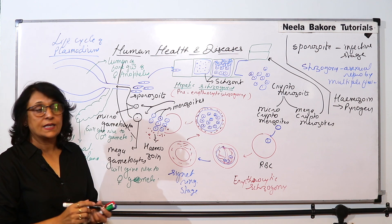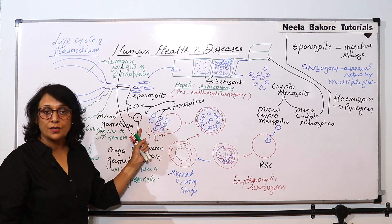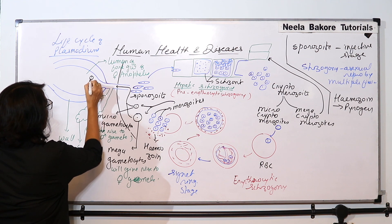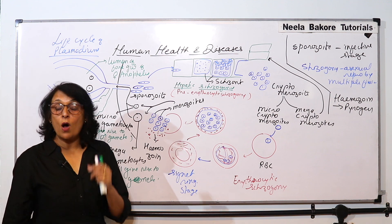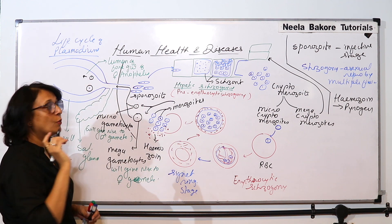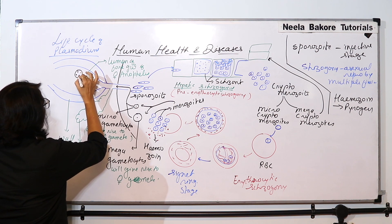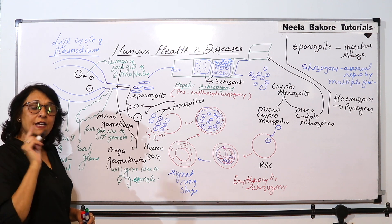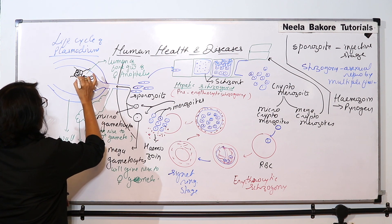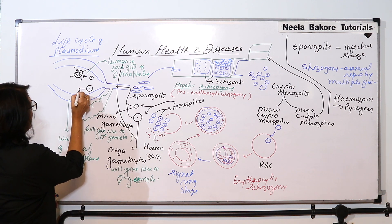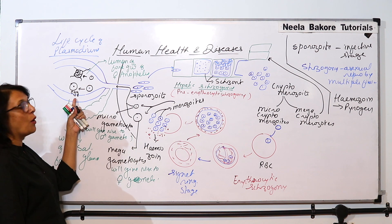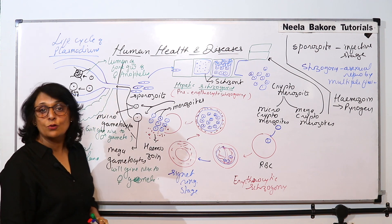Now these two gametocytes — the smaller and the larger — they enter into the gut of the female Anopheles. The smaller one produces the male gametes. Its nucleus will divide and 4 nuclei are formed; every nucleus will be surrounded by a little cytoplasm and will form a male gamete. The macrogametocyte will grow to form the egg. So the macrogametocyte has formed the egg and from the microgametocyte, male gametes are formed.